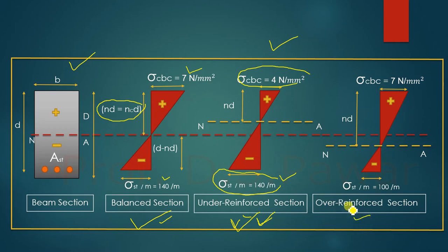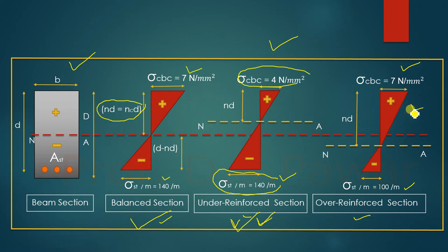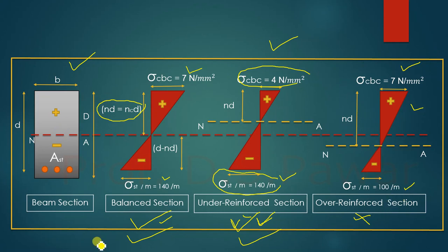In the over-reinforced section, concrete stresses reach permissible limit before steel, causing brittle failure with no prior warning, meaning there is a chance of casualties. Such design is not allowed as per IS 456. We must design a section as either a balanced section or an under-reinforced section. We cannot design as an over-reinforced section. That concludes today's lecture on balanced section, under-reinforced section, and over-reinforced section.